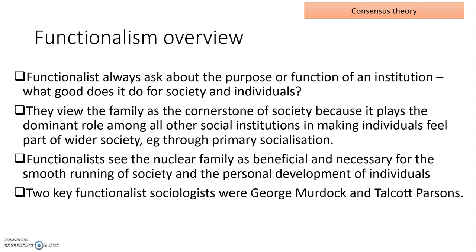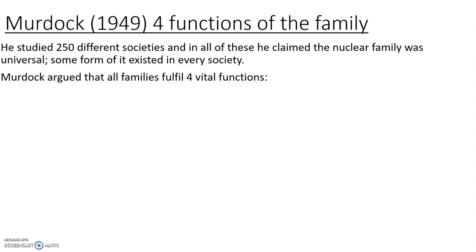The two sociologists we're going to look at for this topic are Murdoch and Parsons. Murdoch looked at the four functions of the family. He studied 250 different societies all over the world and said that the nuclear family was pretty much universal - it could be found in all different countries and societies around the world.